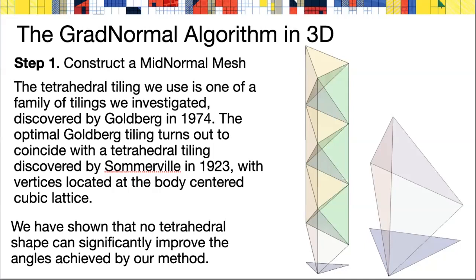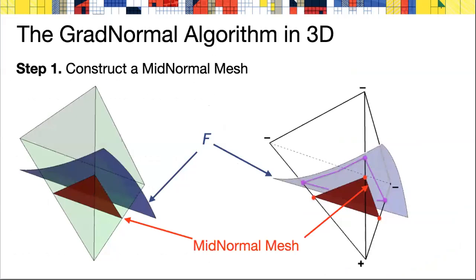There are other possible triangulations by tetrahedra of three space, but we've shown that no tetrahedral shape, even if the tiles have different non-isometric shapes, can significantly improve the angles achieved by our method.